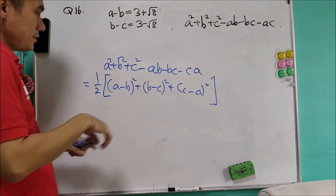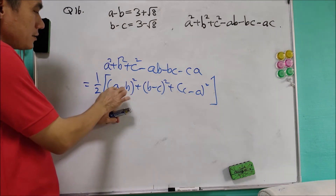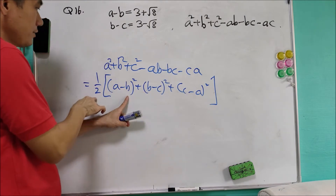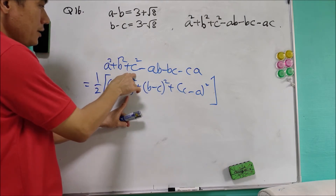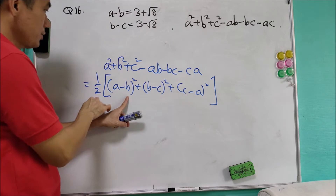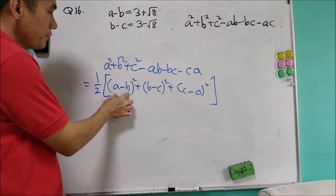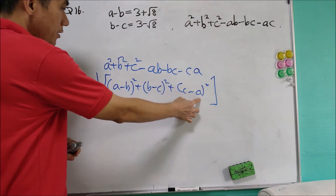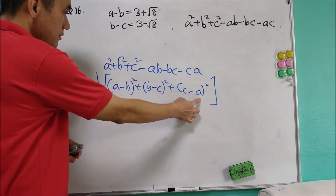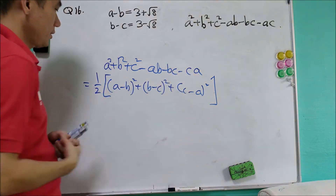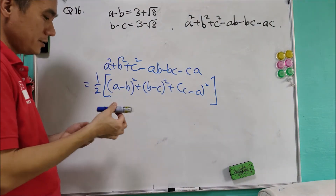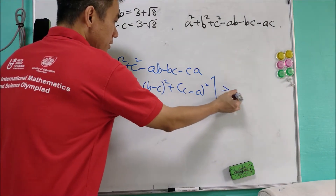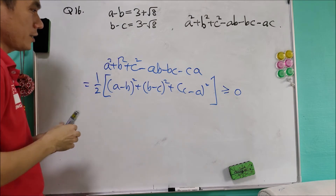We can check this by expanding: we get a squared over 2, b squared over 2, c squared over 2, giving full a squared, b squared, and c squared terms, along with negative 2ab over 2, negative 2bc over 2, and negative 2ac over 2. As an extra note, if a, b, c are real numbers, this expression is always greater than or equal to zero, because it is a sum of squared terms.